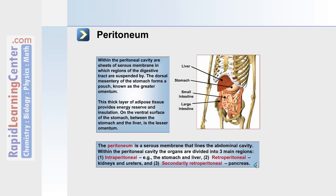Within the peritoneal cavity are sheets of serous membrane in which regions of the digestive tract are suspended. For example, the dorsal mesentery of the stomach forms a pouch known as the greater omentum, and this thick layer provides energy and insulation. On the ventral surface of the stomach, between the stomach and the liver, is the lesser omentum.